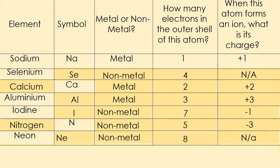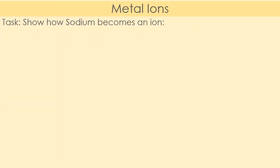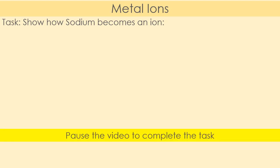When we look at these answers we see that all of our metals will form positive ions, and all of our non-metals will form negative ions. This will come in useful when we look at how metallic bonding works. Next, I would like you to draw on a piece of paper a diagram showing how sodium becomes an ion. You can now pause the video and complete the task.